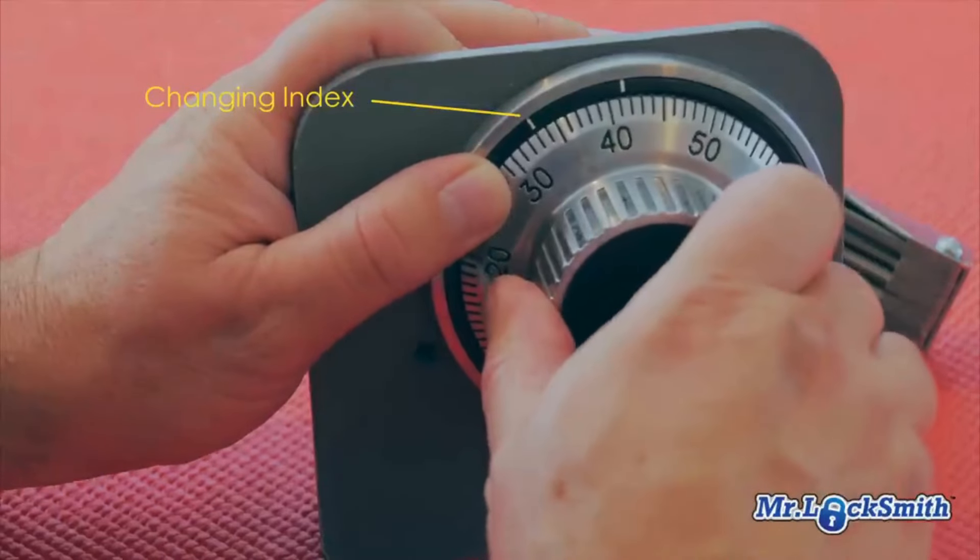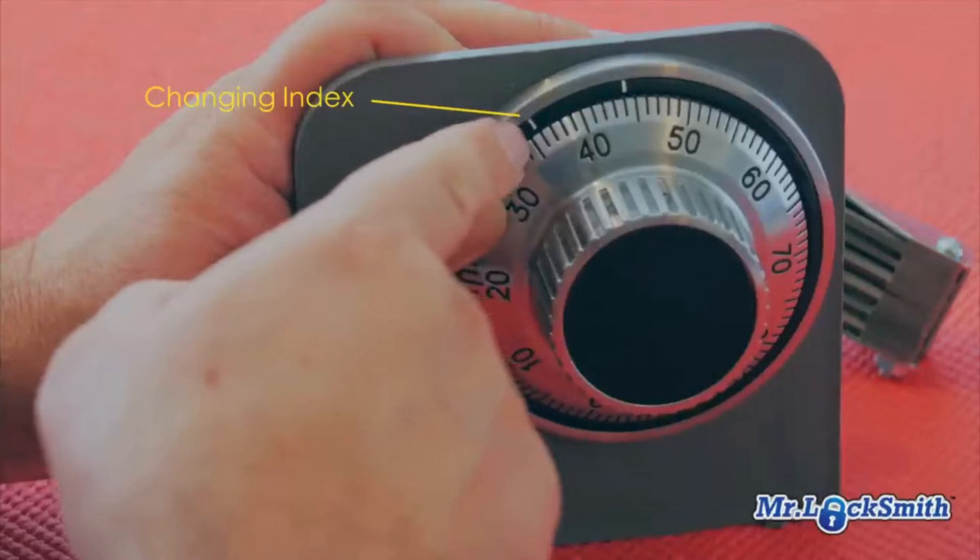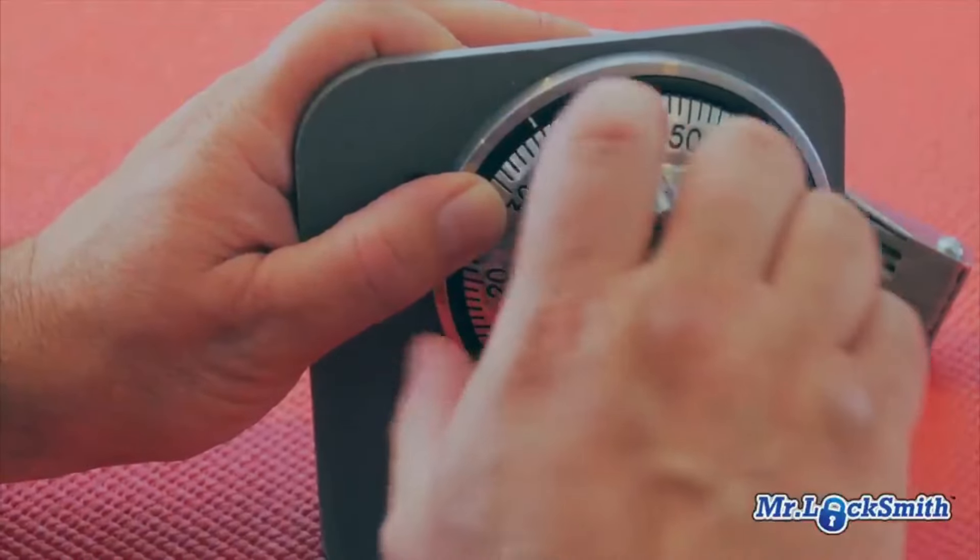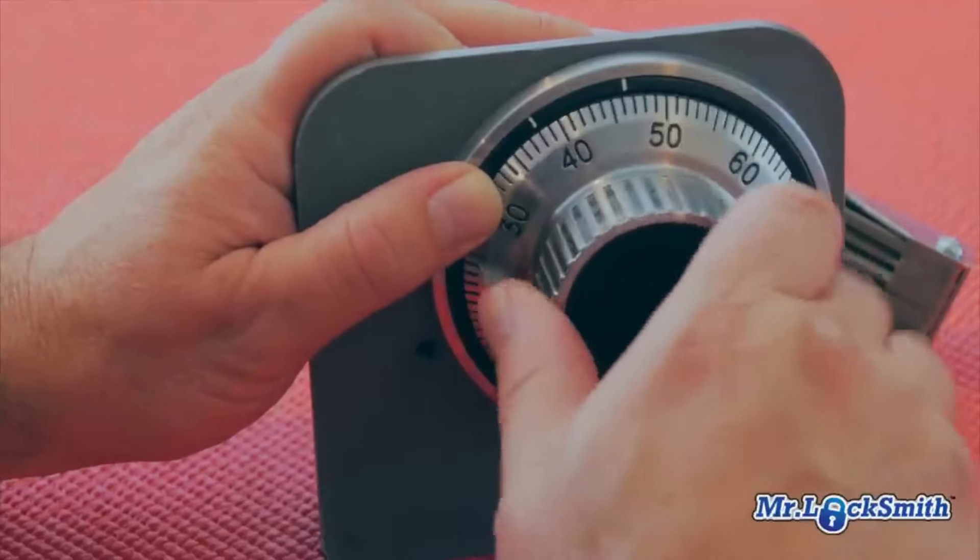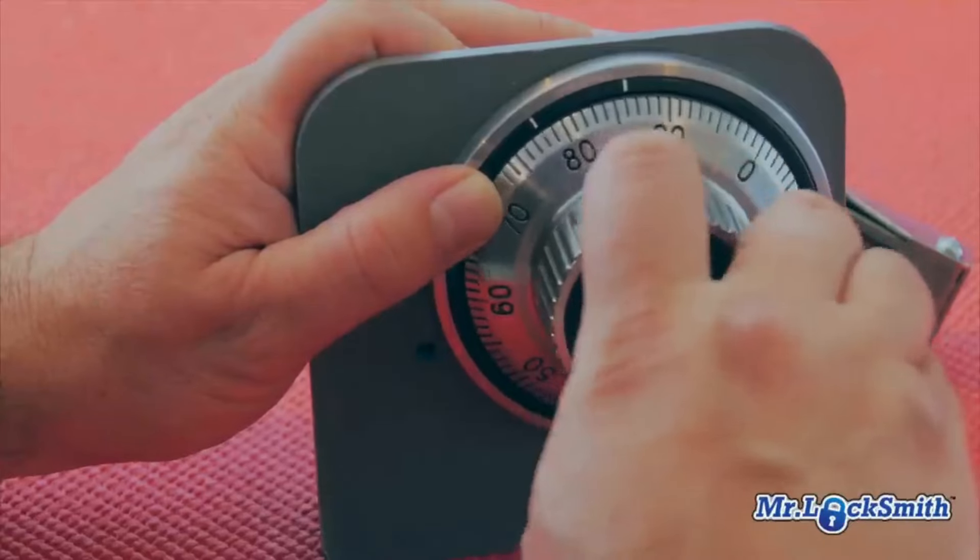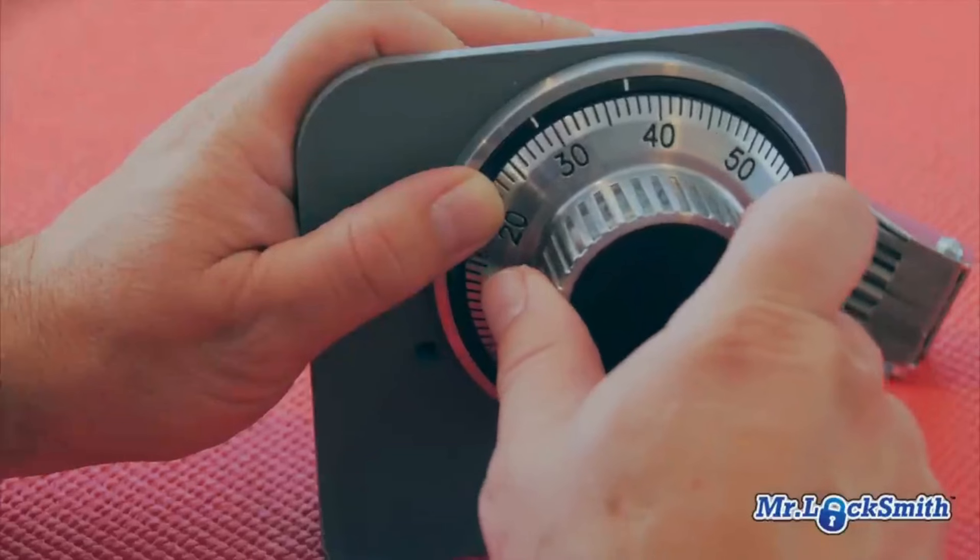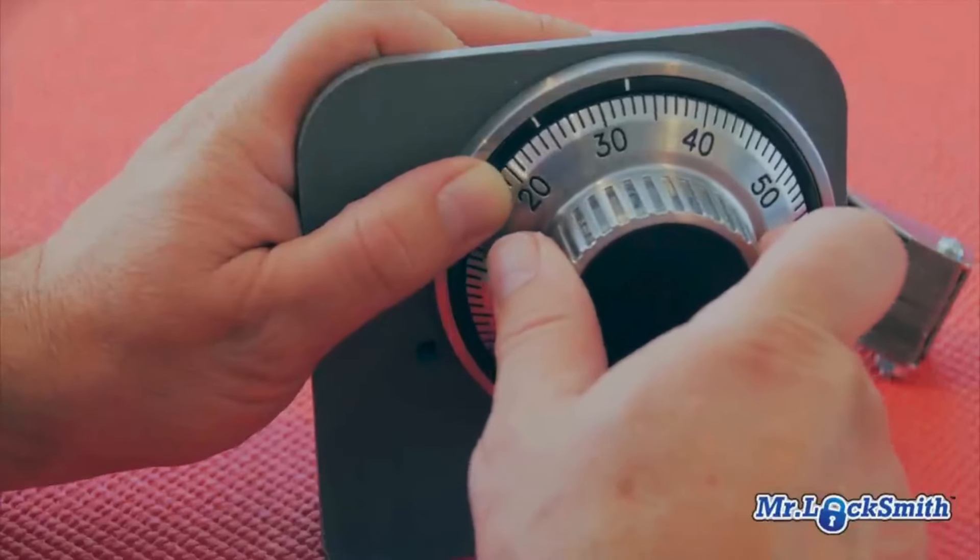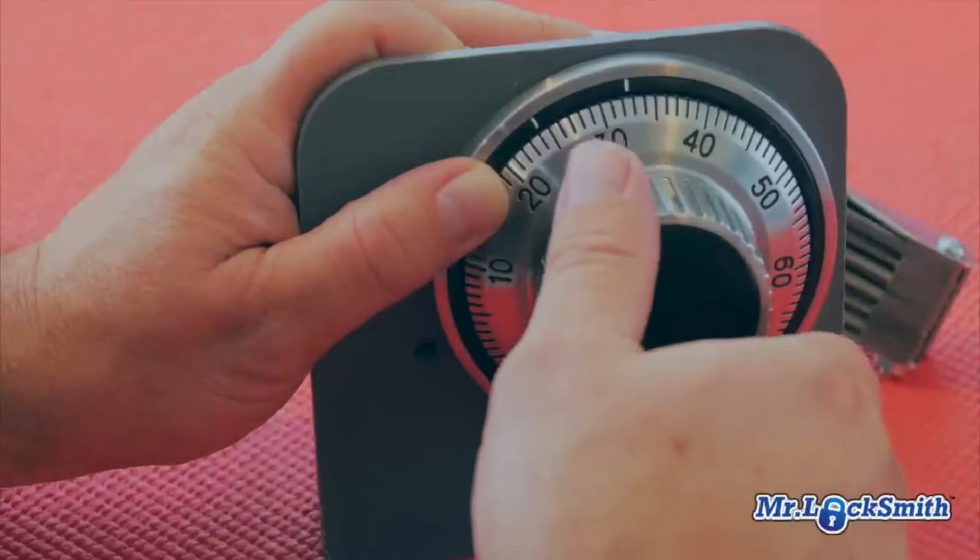Stopping on our first number - I've done half a dozen times, stopping on my first number, which is 36. Again, we're going by the changing index. Next number is 24, so pass it once, twice, stopping on the third time: 24.